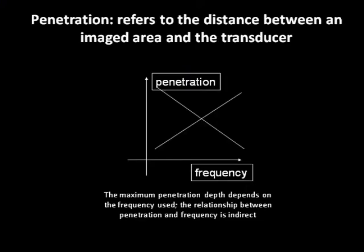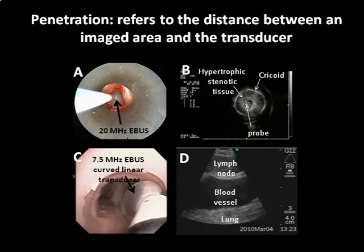Penetration refers to the distance between an imaged area and the transducer. The maximum penetration depth depends on the frequency used — higher frequencies do not penetrate as deep as low frequencies. Here, the high-frequency radial probe has been placed inside a subglottic stenosis at the level of the cricoid cartilage. Hypertrophic stenotic tissues and the intact cartilage are clearly visualized, but the deeper structures are not. Using the low-frequency EBUS transducer in the lower trachea, the right lower paratracheal lymph node, superior vena cava, and distal normal lung parenchyma are seen.